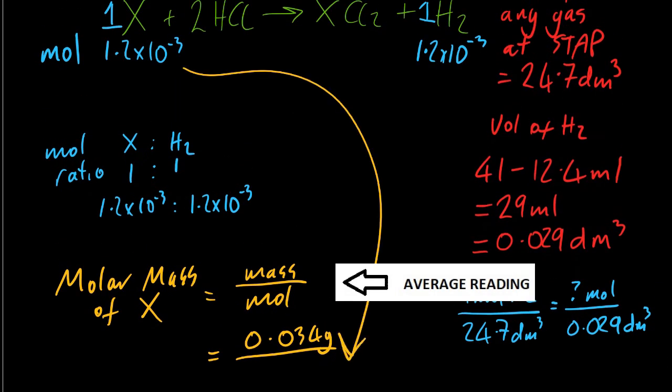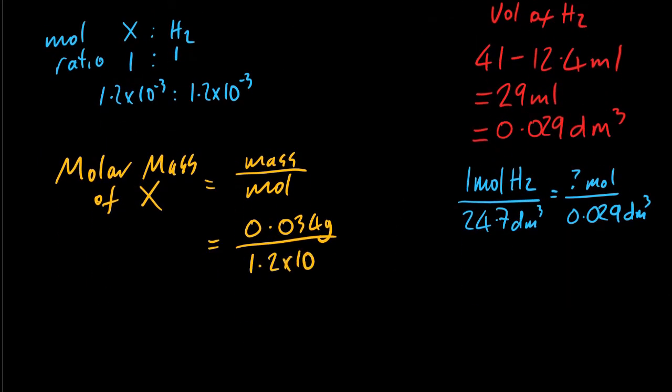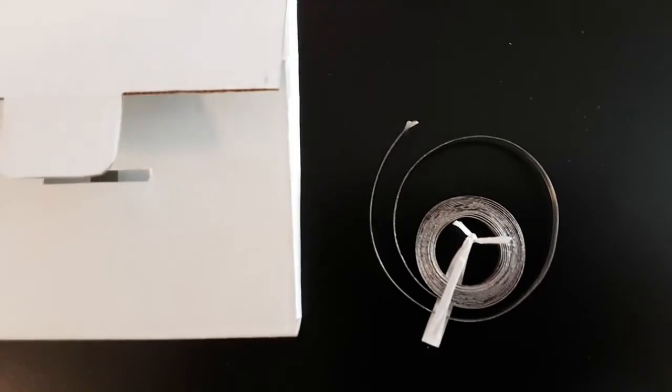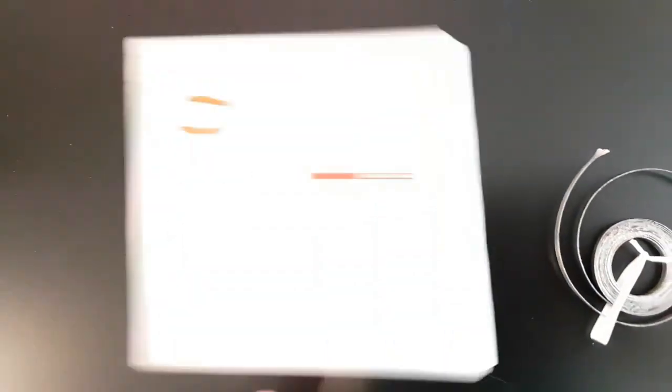Putting in the moles from the balanced equation, we have 28 grams per mole. Now, what was the mystery metal? It was magnesium.